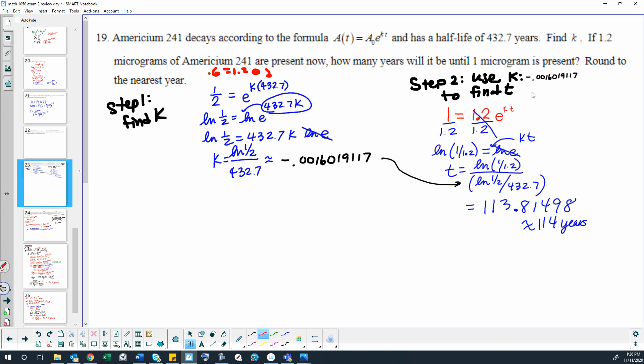Okay, step two. Use k to find t. So this time we're going to use the actual numbers in the second sentence. So we want to know when 1.2 micrograms turns into 1 microgram. So 1 microgram later is equal to 1.2 initial micrograms times e to the kt. Now, I didn't put an actual number in here, but we know what k is. So we will plug that in as we calculate it.